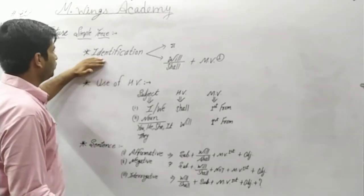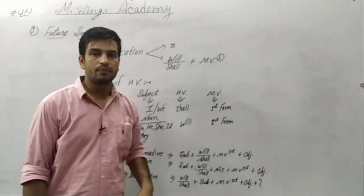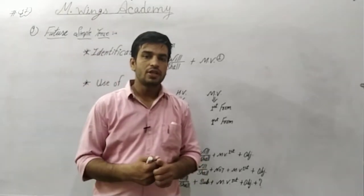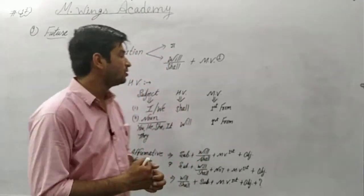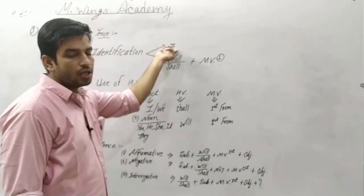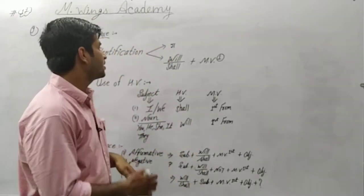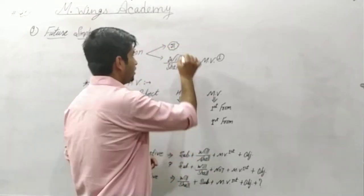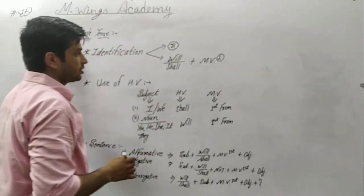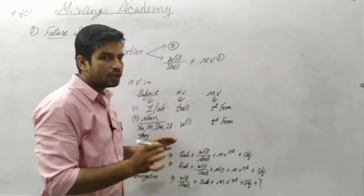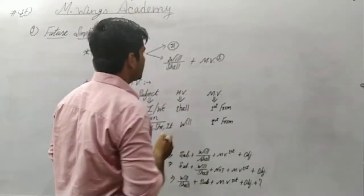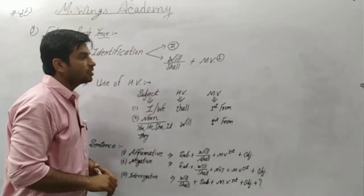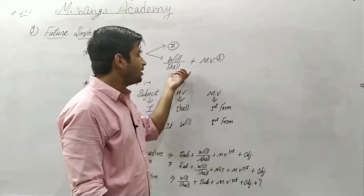First of all, we will see how we can identify a tense in a given sentence. There are two options. If the given sentence is in Hindi, see the ending of the sentence. If the Hindi sentence ends with 'ga/ge/gi', that means it is Future Simple Tense. Any matras added with that ending still indicate future simple tense.